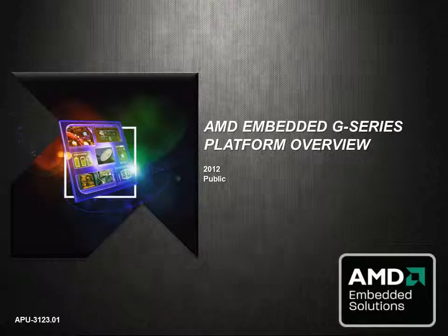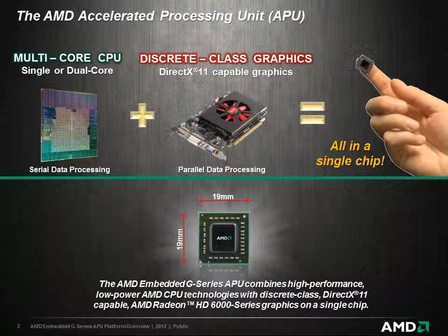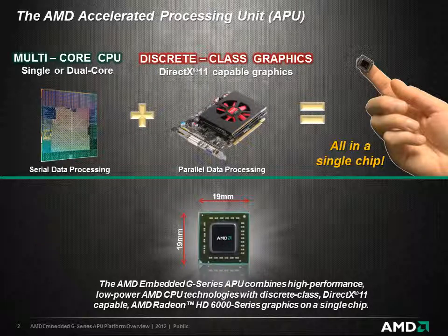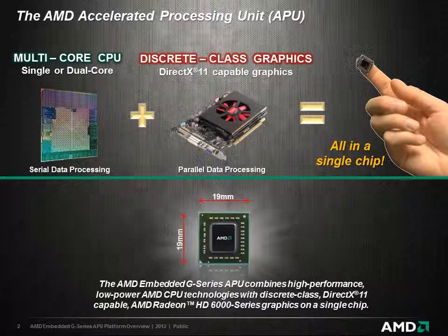Welcome to the AMD Embedded G-Series Platform Overview. Before discussing the AMD Embedded G-Series APUs, let's begin by recalling what an APU is. Instead of a single processor, an APU is actually a combination of processors — a multi-core compute processor, or CPU, and a multi-core graphics processor, or GPU, in a single chip. This single chip is known as the Accelerated Processing Unit, or APU.